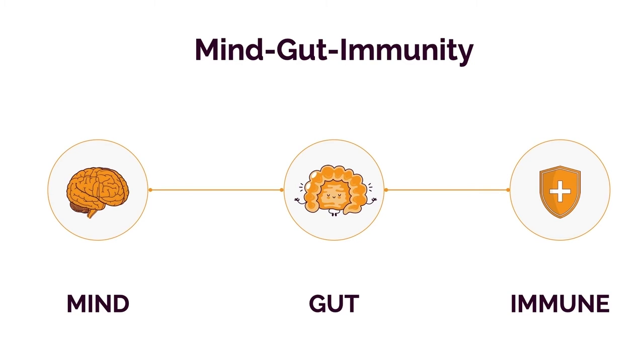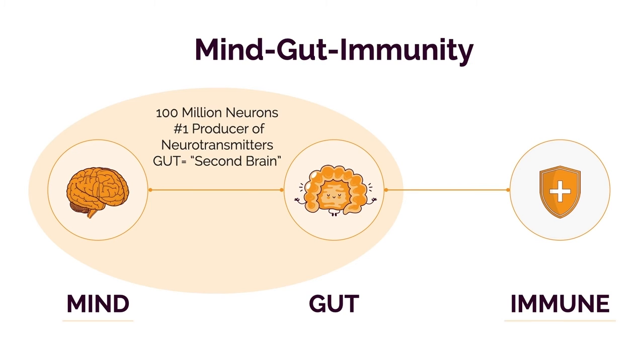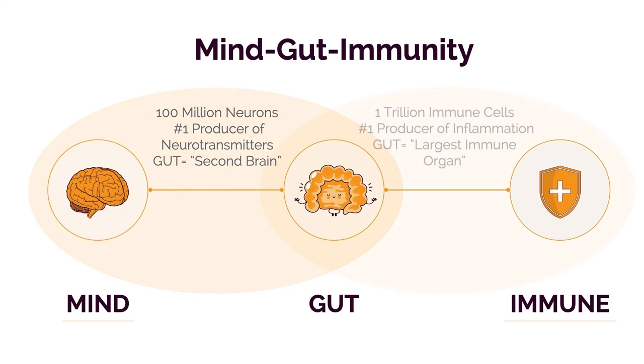This course is designed to leverage these five key elements and maximize them in order to heal the body. So if you're wondering where you should spend all your time and energy and focus, it's on these five. The gut contains 100 million neurons and it's the largest producer of neurotransmitters in the body — that's why it's earned the nickname 'the second brain.' It's also host to one trillion immune cells, which means a majority of your immune system is actually housed in the gut.